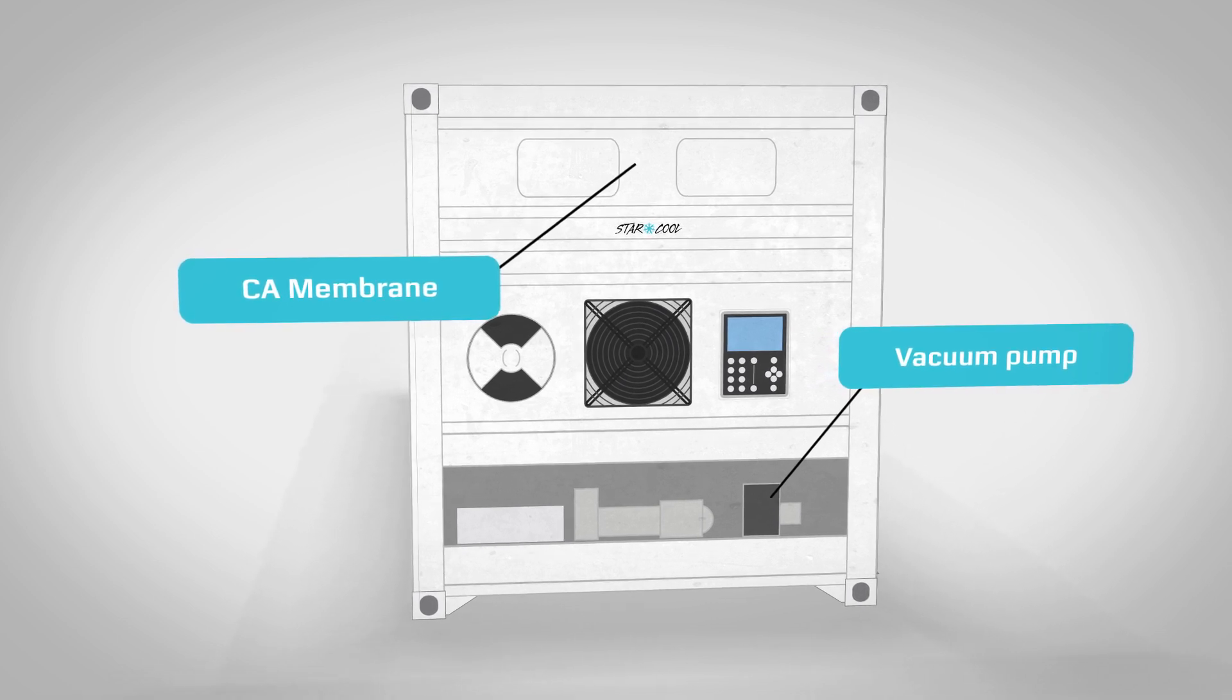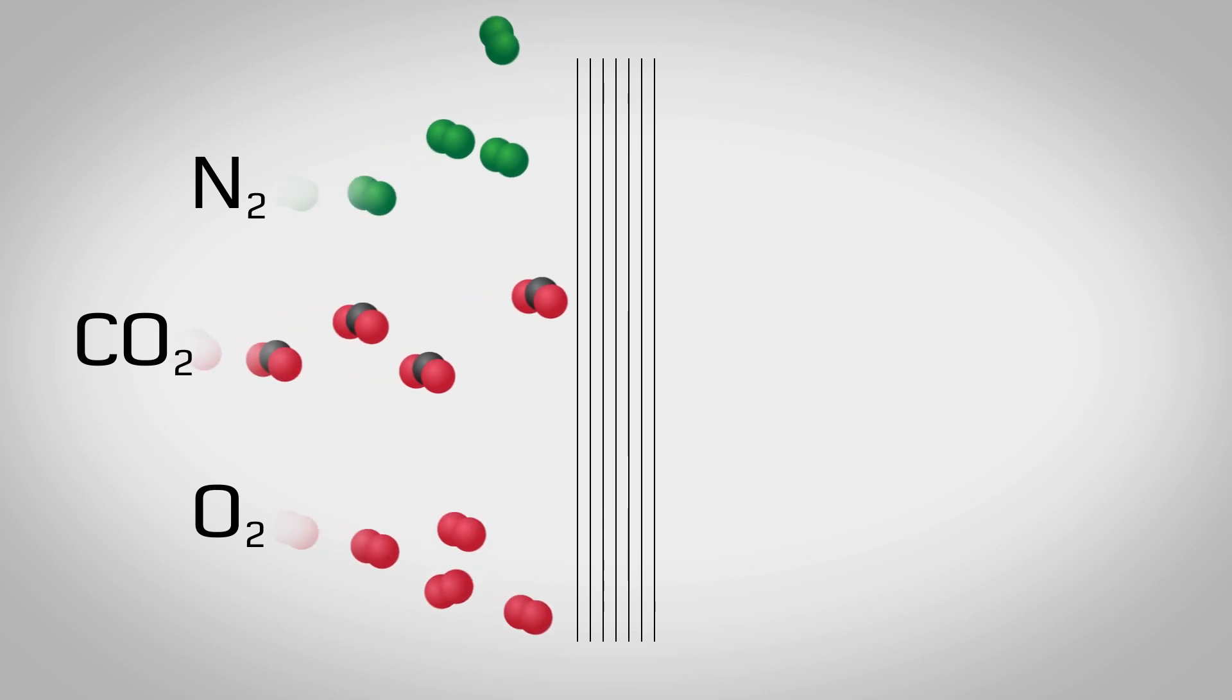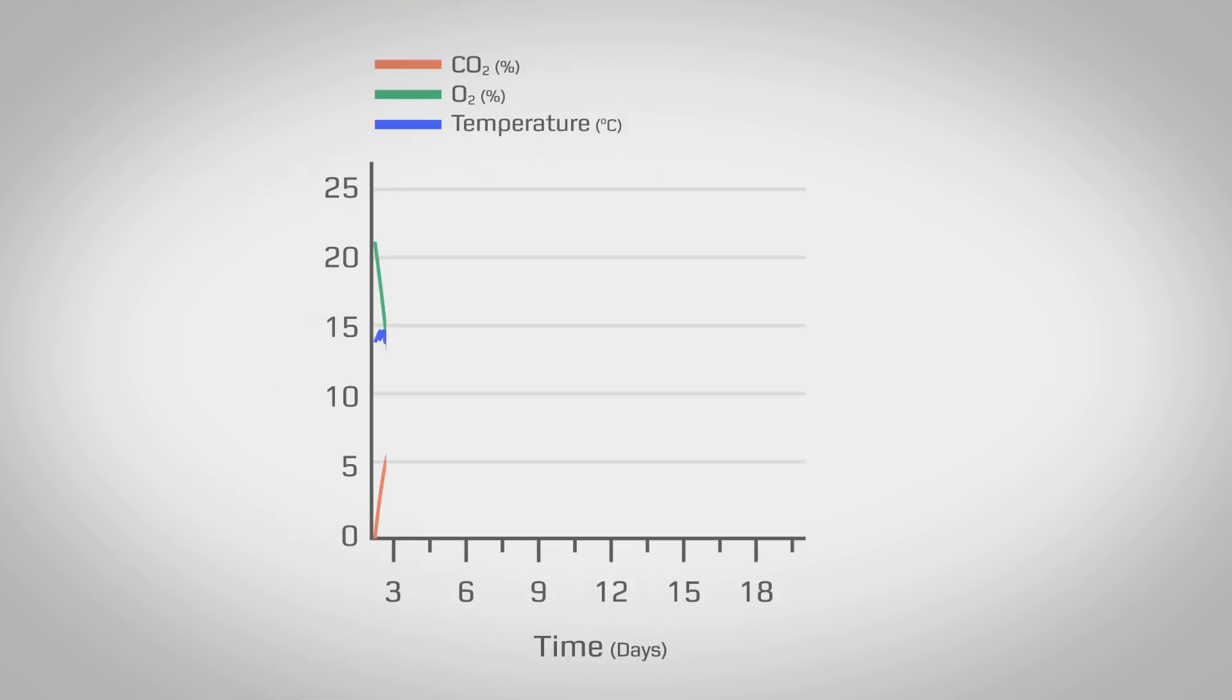The CA membrane allows carbon dioxide to leave the reefer while nitrogen and oxygen are retained. This increases the nitrogen level inside the reefer as the oxygen is reduced due to the respiration and the carbon dioxide is removed by the CA membrane.